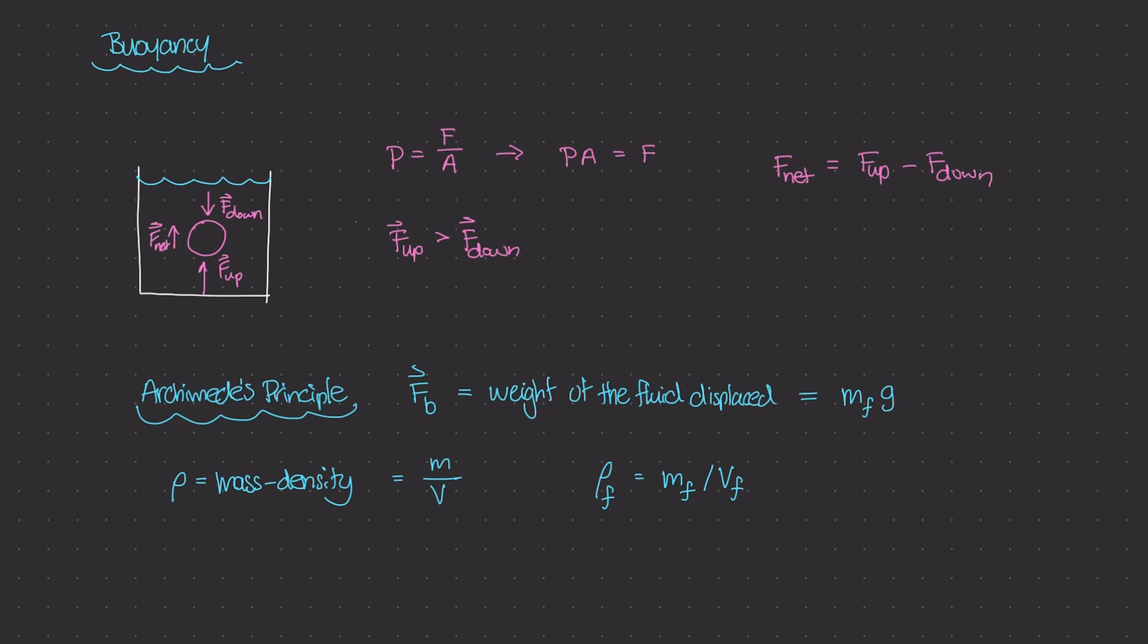On the side here, we know that weight is equal to mass times gravity. So if we take a look at this equation right here, and we just rewrite it, we multiply both sides by volume, we're going to get the mass of the fluid is equal to the mass density times the volume of the fluid.